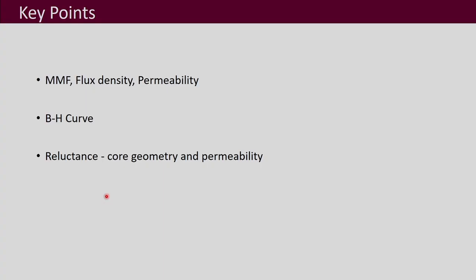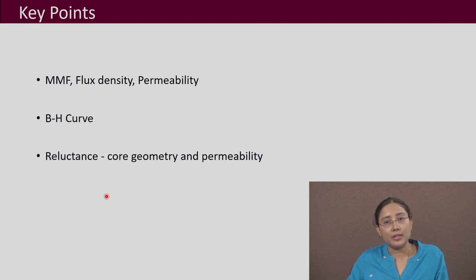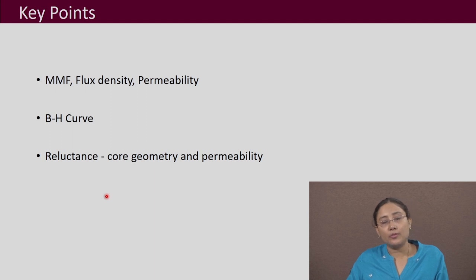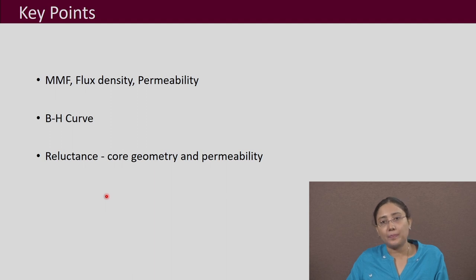The key points of this lecture are: we discussed magnetomotive force, flux density, and magnetic field intensity; then the very important term permeability, which denotes how easily and to what extent a material can be magnetized; then the BH curve, which appears very different for different materials; then reluctance, which depends on core geometry and magnetic material properties. Thank you.